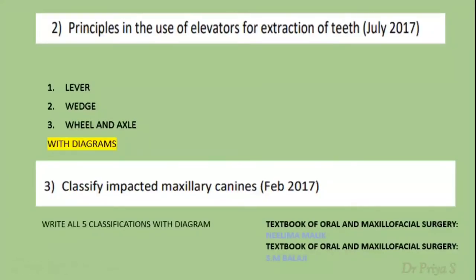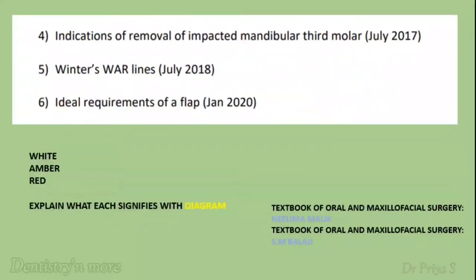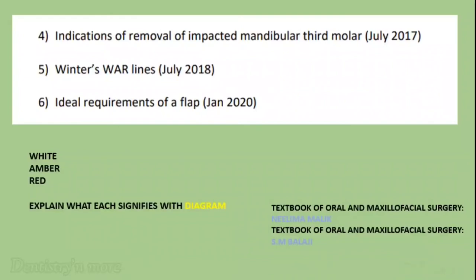For the question on principles of elevators, explain in detail the lever, wedge, and wheel-and-axle principles with diagrams. Mention examples for each principle and add a note on mechanical advantage. For classifying impacted maxillary canines, write all five classifications with diagrams. For short answers, list at least 8 to 10 indications for removal of impacted mandibular third molars. For Winter's lines, explain what the white, amber, and red lines are using a diagram and what each signifies. For ideal requirements of a flap, do not confuse it with principles of incision — write specifically about flap requirements.